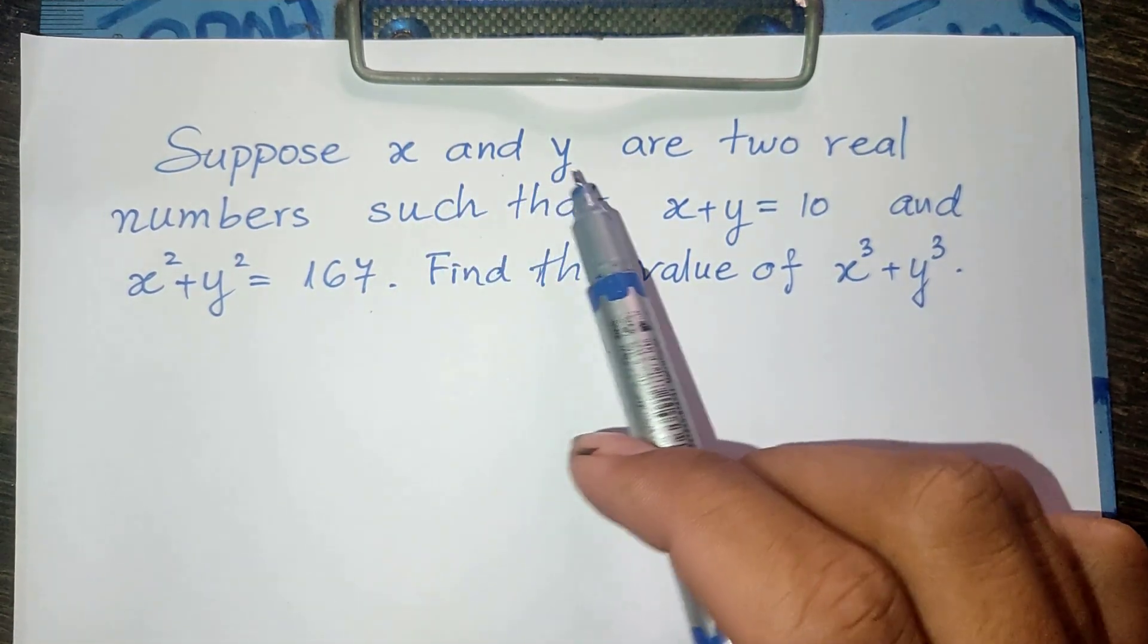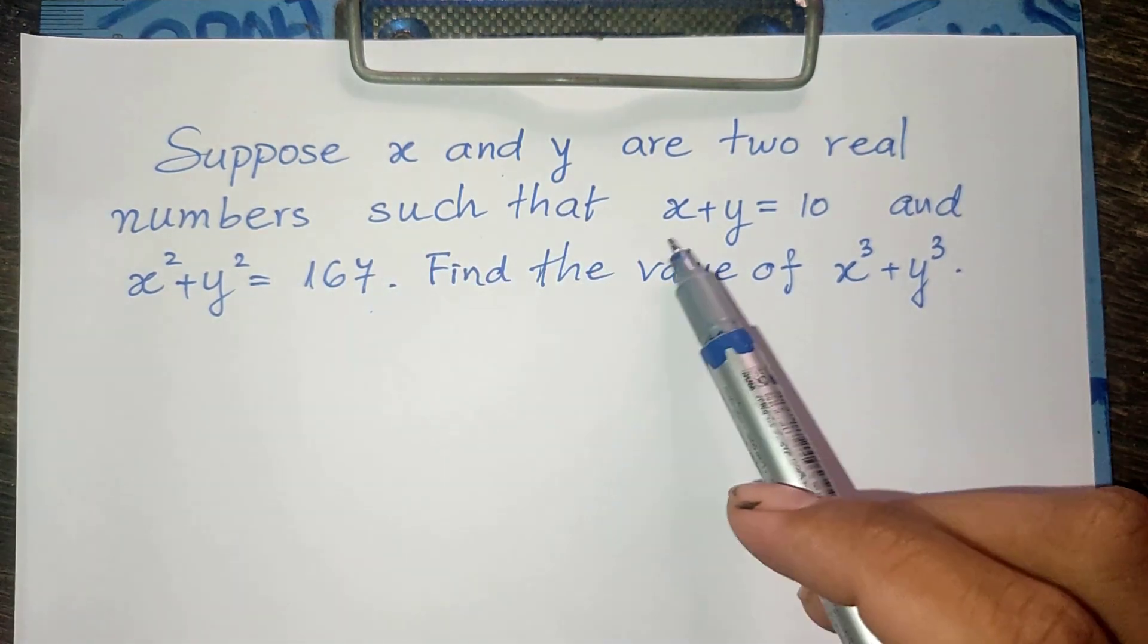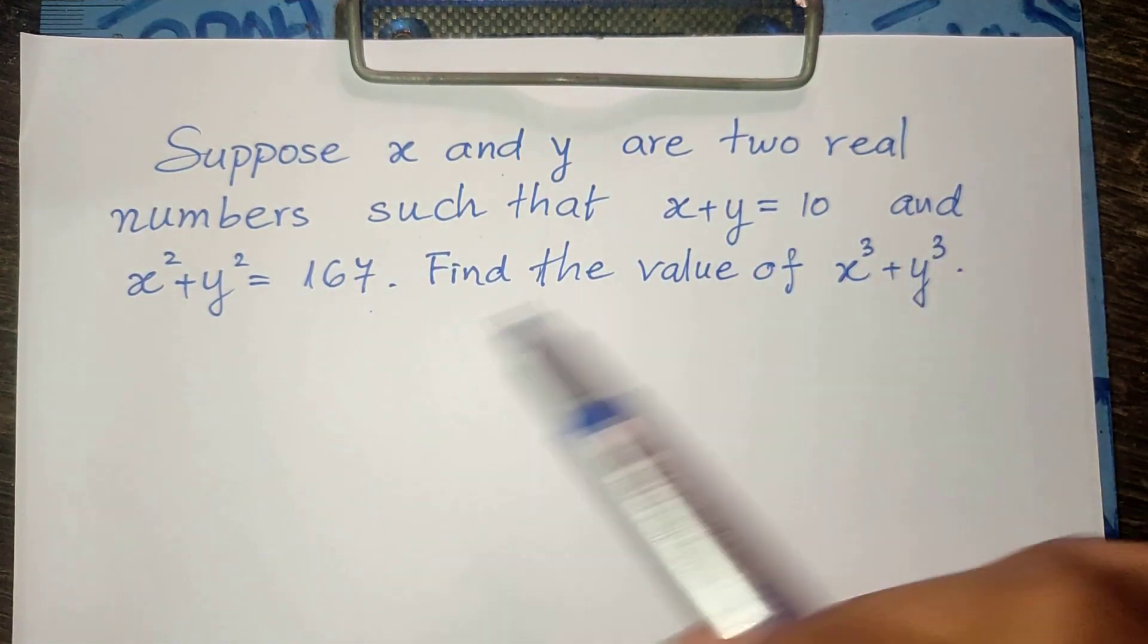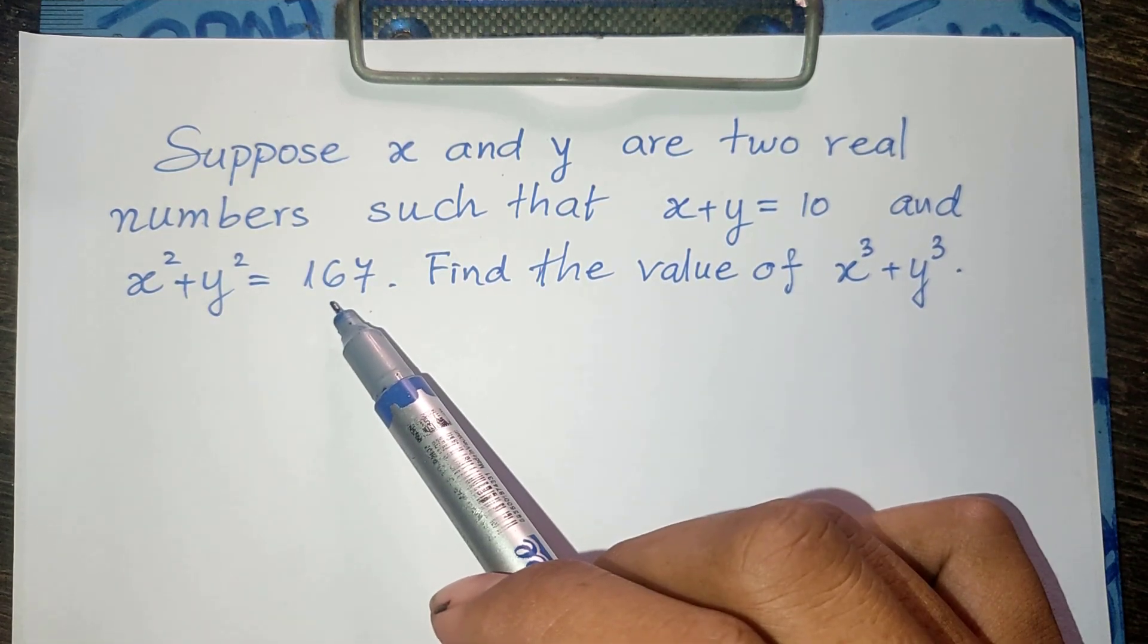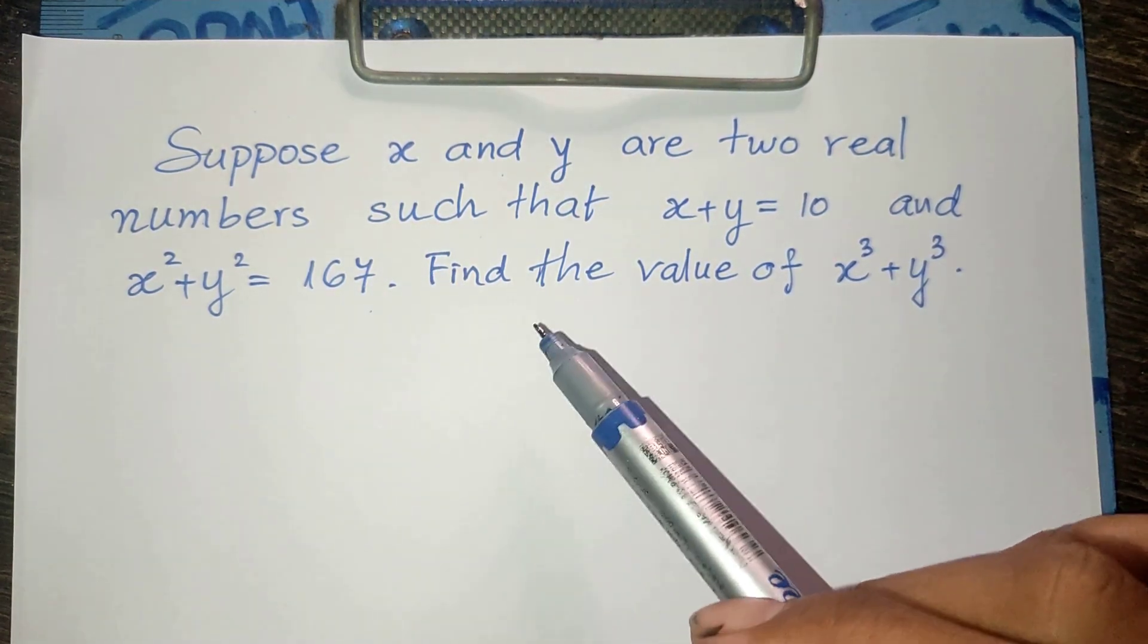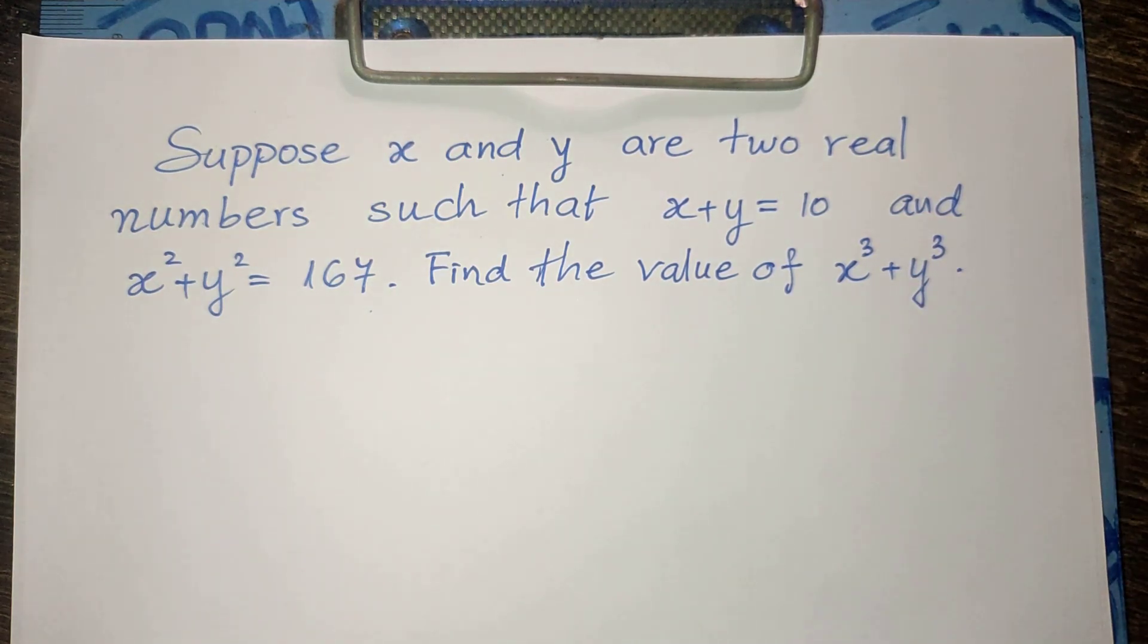Suppose x and y are two real numbers such that x plus y equals 10 and x squared plus y squared equals 167. Find the value of x power 3 plus y power 3.